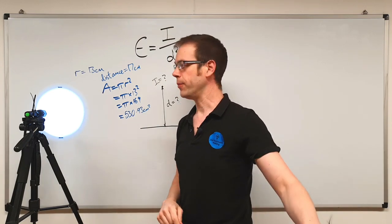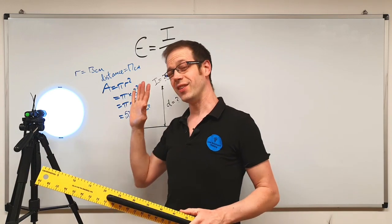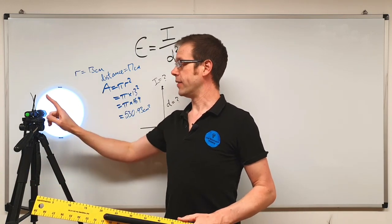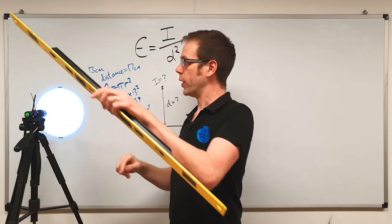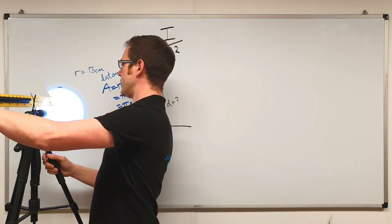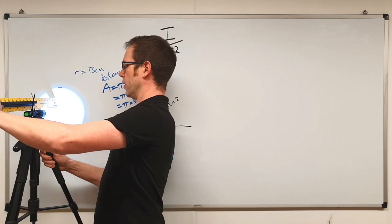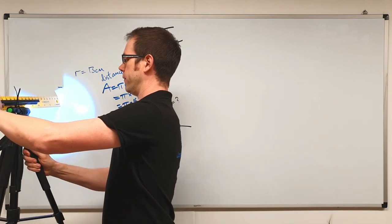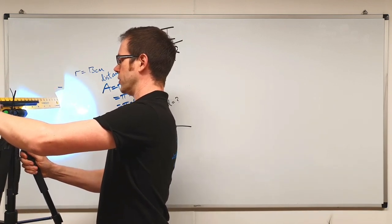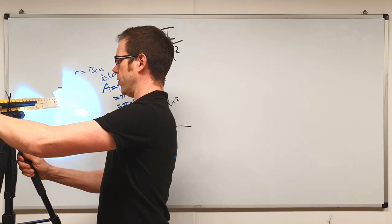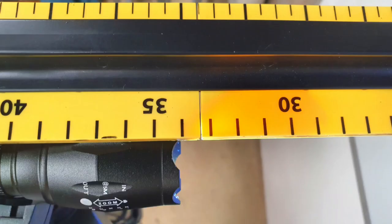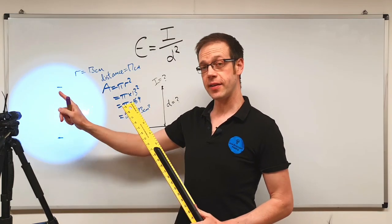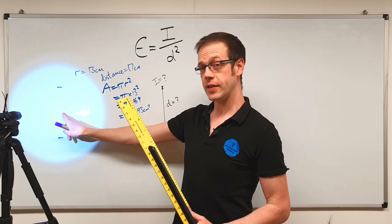So now what we're going to do — and this is the critical point — is we're going to double the distance that the light source is from the surface it's illuminating. We're going to move it back until it's measuring 34 centimetres away. So we've now doubled the distance that the light source is away from the surface it's illuminating.